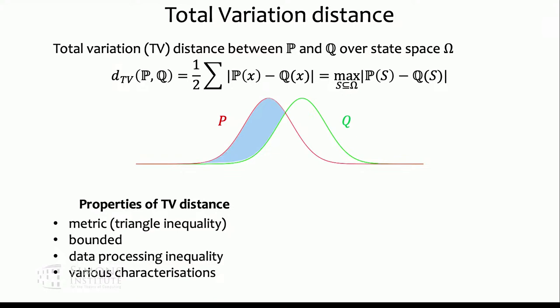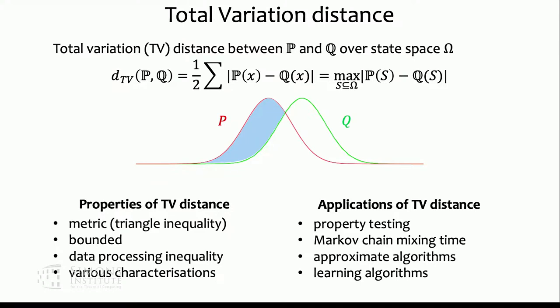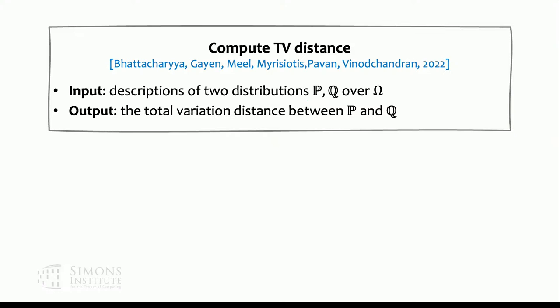For example, following this definition, we can pick an arbitrary event S and look at the difference, which gives us a lower bound on the total variation distance. It has many applications, such as defining the mixing time of Markov chains. In many applications like analyzing mixing time, we only need to analyze the lower or upper bound of the TV distance. But in this work, we consider the computational problem: given the description of two distributions p and q, compute their total variation distance.